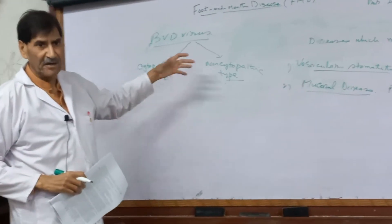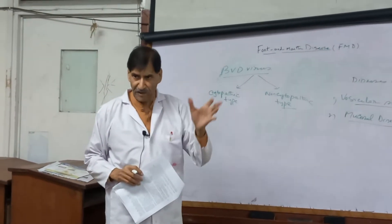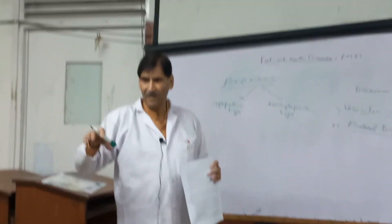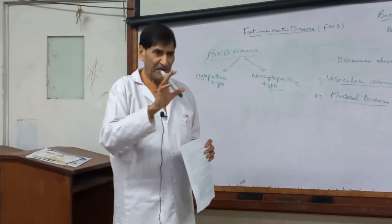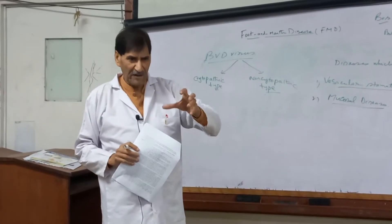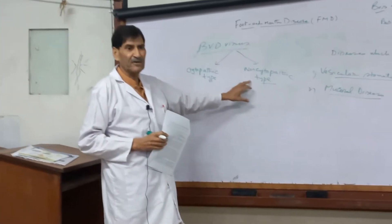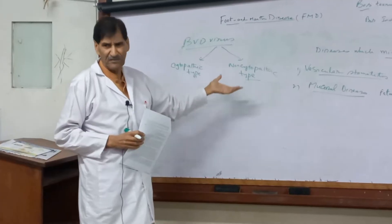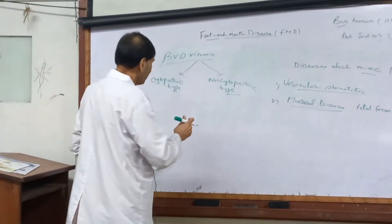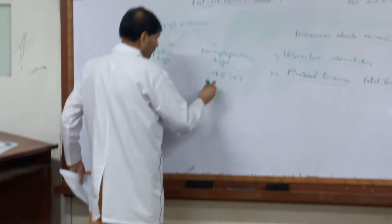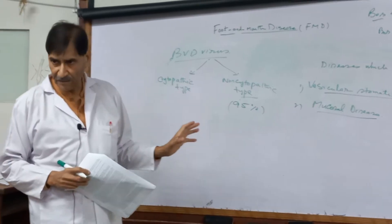Whether the virus is Cytopathic or Non-Cytopathic is determined based on lab tests. You grow the virus on artificial media and look for lesions on the plate. If it produces death of the cell culture, it is called Cytopathic. If it does not produce death of the culture medium, it is called Non-Cytopathic. 95% of BVD virus isolates are Non-Cytopathic.